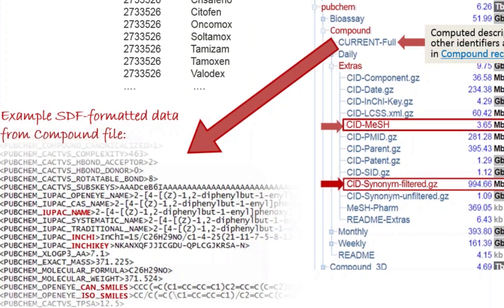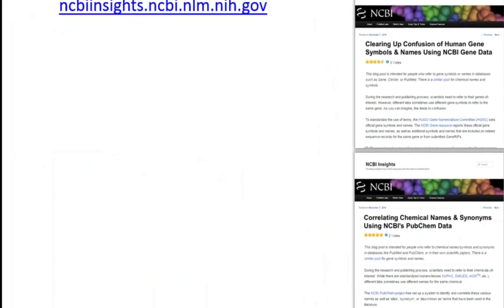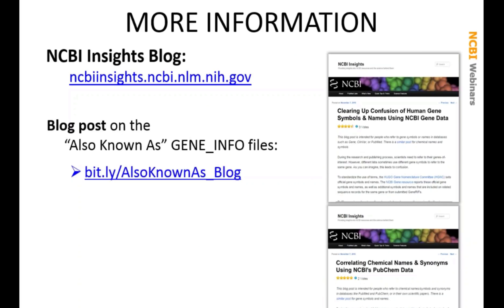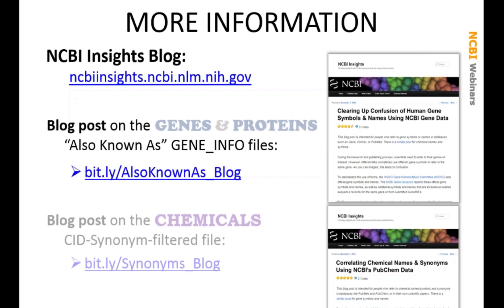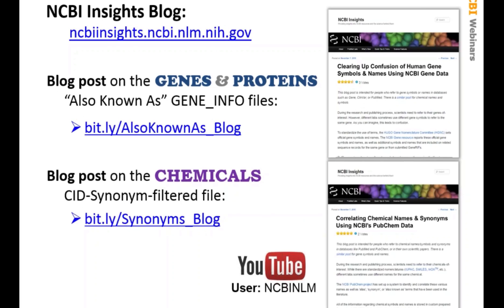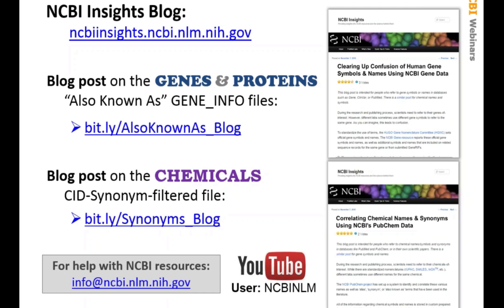You don't have to remember all of this or even watch this video again. All of this information has already been written up with descriptions and links in two NCBI Insights blog posts. The NCBI Insights blog provides information about NCBI resources with tips and tricks to help you use our site and make cool discoveries. One blog post fully explains how to get the also-known-as terms for genes and proteins. Another talks about how to get chemical synonyms and even mentions simple APIs you can use if you prefer those to downloading large files. I've included bit.ly links here to make them easy to find. You can always search the NCBI Insights blog for more tips and tricks. Many helpful how-to videos, including this one, will be added shortly to our YouTube channel. If you have any questions, please send an email to our help desk at info@ncbi.nlm.nih.gov.